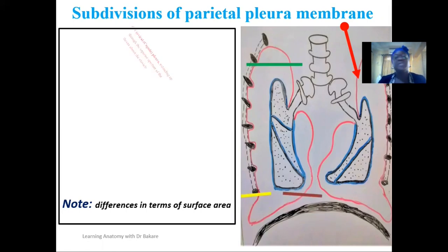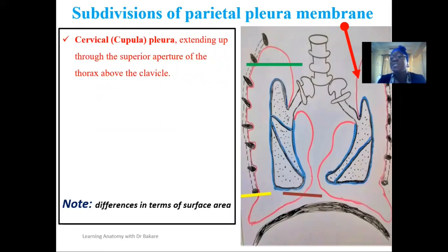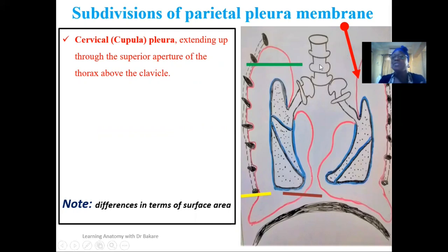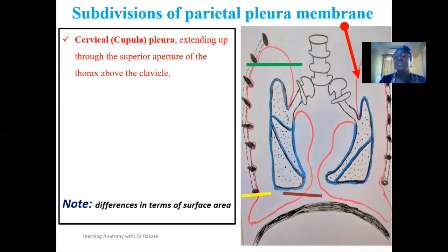The cervical pleural can also be referred to as the cupola pleural. This pleural extends above the superior aperture of the thorax — the superior aperture is where the thorax begins. The region that extends above it is called the cervical pleural because it extends towards the cervical region. So any part of the parietal pleural that extends above the superior thoracic aperture is the cervical pleural.